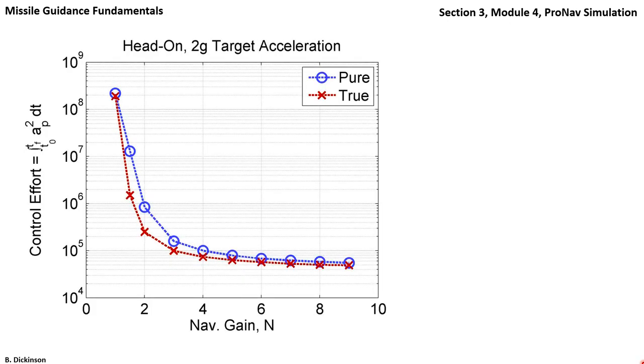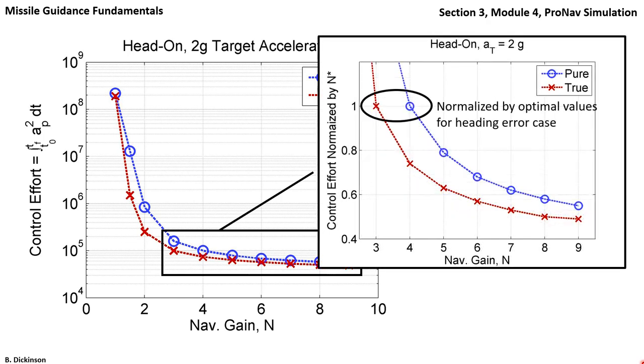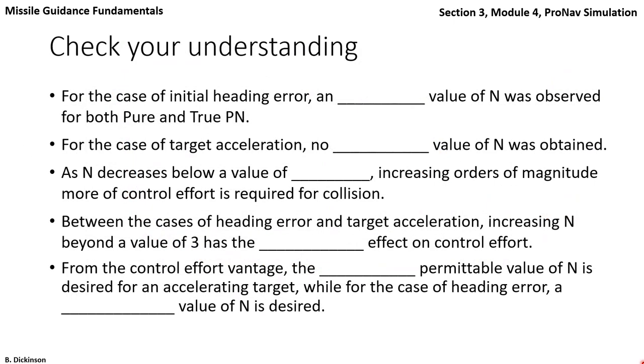And now the case of the accelerating target. Zooming in for navigation gain 3 or greater, we start to see the drop-off in control effort as N increases. Plotting on a linear scale and normalizing by the optimal values for the heading error case, we clearly see substantially less control effort as N increases for both pure and true. So for an accelerating target, these forms of pronav apparently do not have an optimal N that exists. But for the case of heading error, an optimal N does exist. In future modules, we'll get more into the details of selecting the correct N for a system.